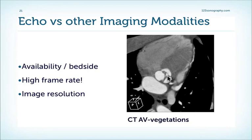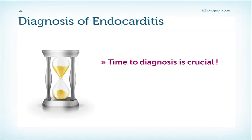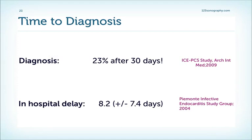Here is an example of a CT where we nicely see vegetations on the aortic valve. Time to diagnosis is crucial for prognosis, so it is very important to refer patients early to echocardiography. However, in reality this is not always done because the symptoms are sometimes so difficult to interpret. In a study published in 2009 in the Archives of Internal Medicine, the diagnosis of endocarditis was made only 30 days after the onset of symptoms in 23% of patients. Even inside the hospital, there is often a delay: data from the Piedmont Infective Endocarditis Study Group published in 2004 showed a mean in-hospital delay of 8.2 days before echocardiography was performed.